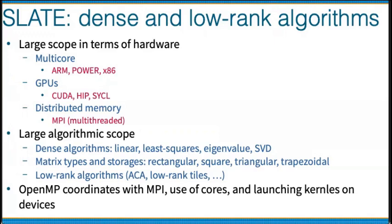The algorithmic scope of SLATE is very large. It includes dense algorithms similar to those in PLASMA — linear least squares, eigenvalue, and SVD — as well as multiple matrix types and storage types including rectangular, square, triangular, and trapezoidal matrices arranged in an object hierarchy intuitive to users. SLATE also supports low-rank algorithms including low-rank tiles and ACA compression. OpenMP runtime coordinates with MPI for use of cores and launching kernels on devices.